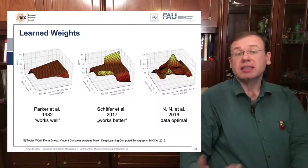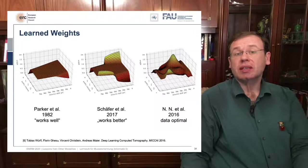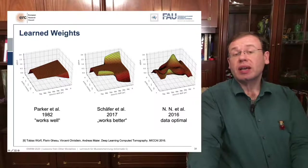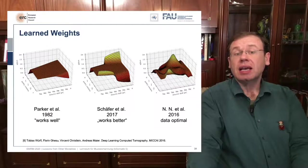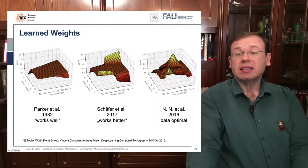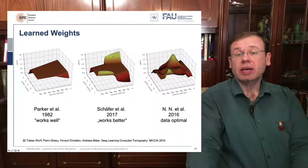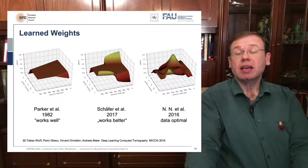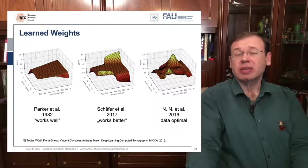Interestingly, we can look at the learned weights. Starting from Parker's approach — downweighting rays collected twice to sum to one on the opposite direction, known since 1982 — our neural network essentially preserves the Parker weight shape but increases weights in two specific areas. One year later, colleagues from Philips suggested increasing weights in exactly those areas, since they correspond to sinogram regions where too few rays are measured. This is a complete heuristic, but the neural network found a data-optimal weighting very similar to what Schaefer and colleagues identified.